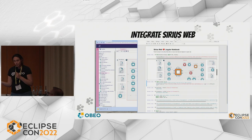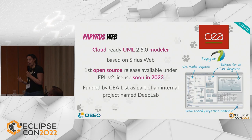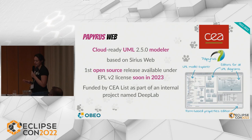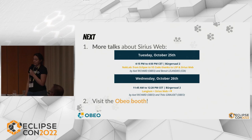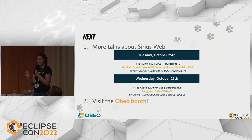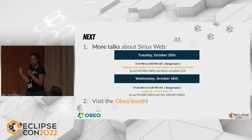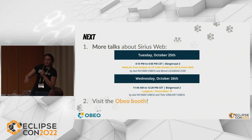You can also use Sirius Web to create your own domain-specific tools. For instance, Obeo is developing a new Cloud-ready UML2 modeler based on Sirius Web, funded by the CEA List as part of an internal project named DeepLab. The first version of the Papyrus Web project will be released under EPLv2 license at the beginning of next year. There are two more talks about Sirius Web: one today at quarter past four by Axel about migrating from Eclipse to VS Code, and another tomorrow morning about integrating Langium for textual editors within Sirius Web. Visit our booth just in front of this door.